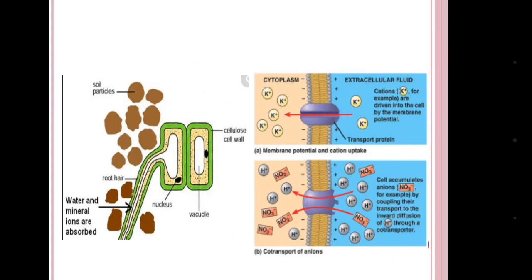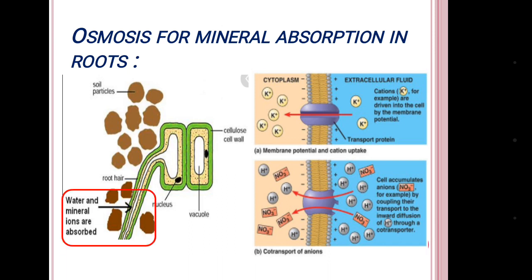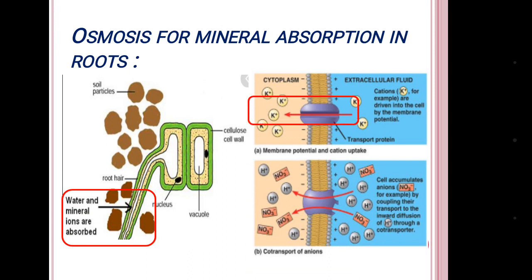The next importance is the absorption of minerals in roots. This can occur through passive diffusion or osmosis along with water, or it can be active absorption that requires ATP.